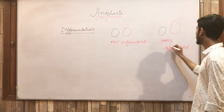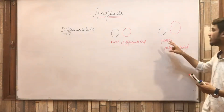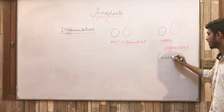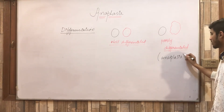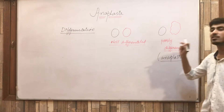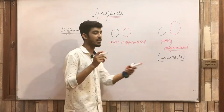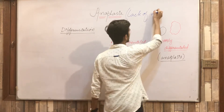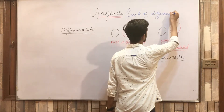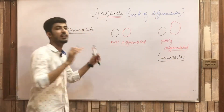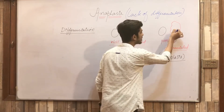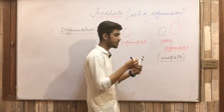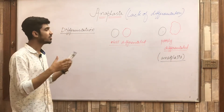These cells are poorly differentiated. Beneath poorly differentiated, I am writing: anaplasia. This poor differentiation is called anaplasia. Simply put, the definition of anaplasia is the lack of differentiation — meaning the normal cell and the tumor cell are not resembling each other. This is called anaplasia.